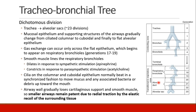The tracheal bronchial tree continues to undergo dichotomous division, starting at the carina and continuing for about 23 generations. It is lined with mucosal epithelium. The cells start as ciliated columnar cells, then become cuboidal, and finally flat alveolar epithelium. Gas exchange can only occur across flat epithelial cells, which begin at the respiratory bronchioles around generations 17 through 19.